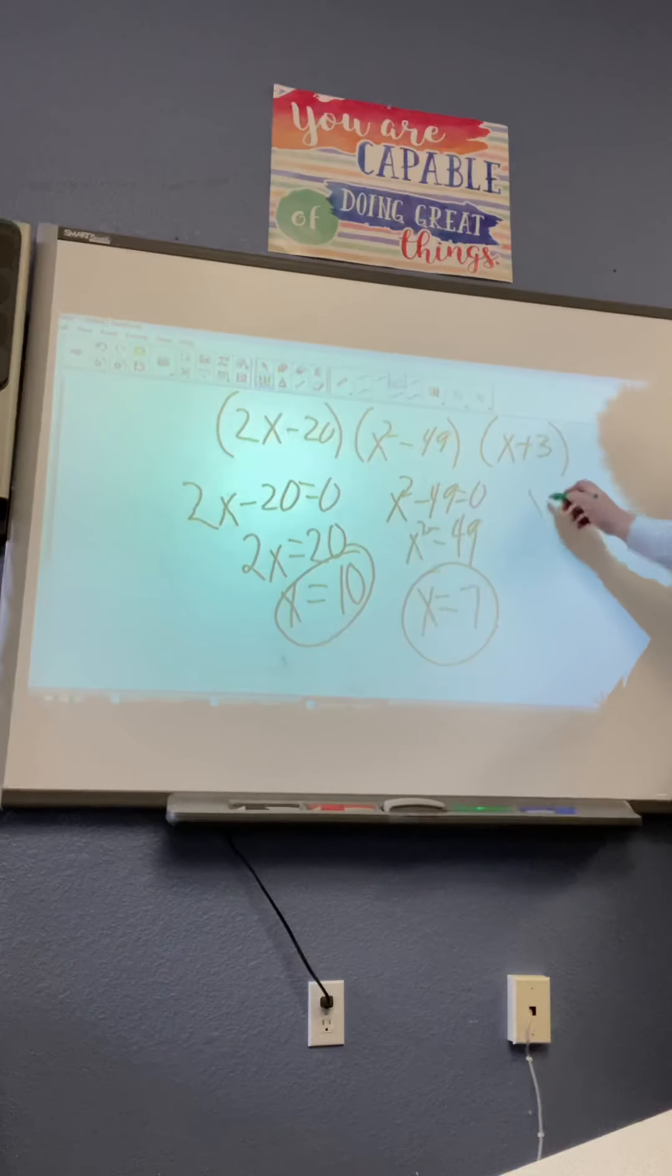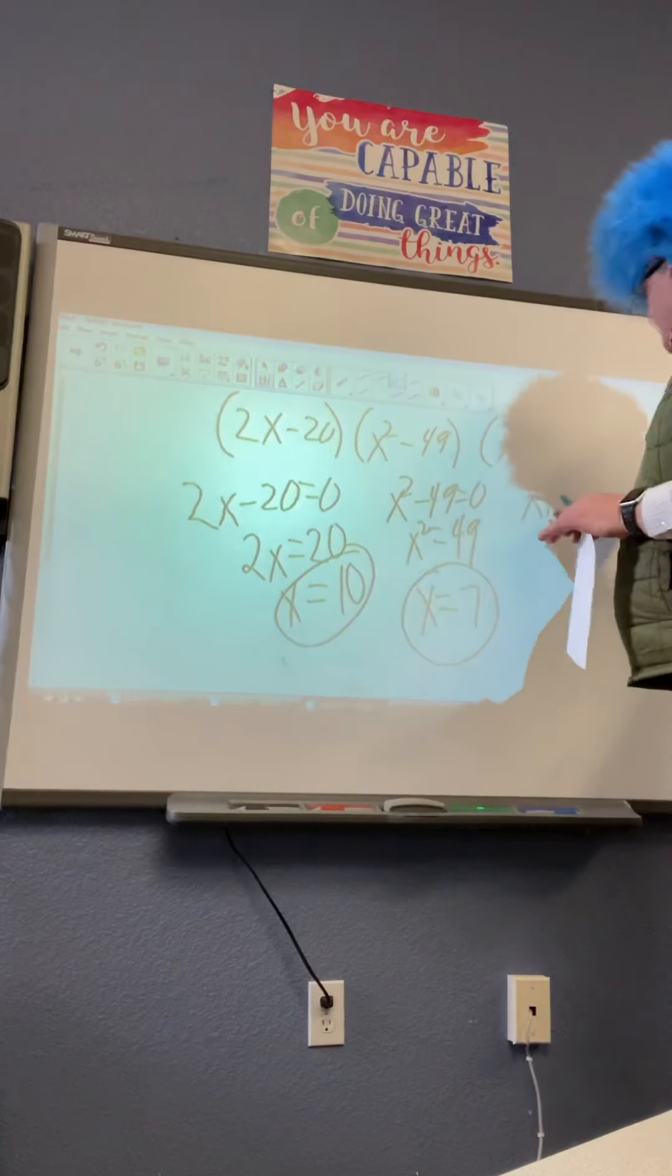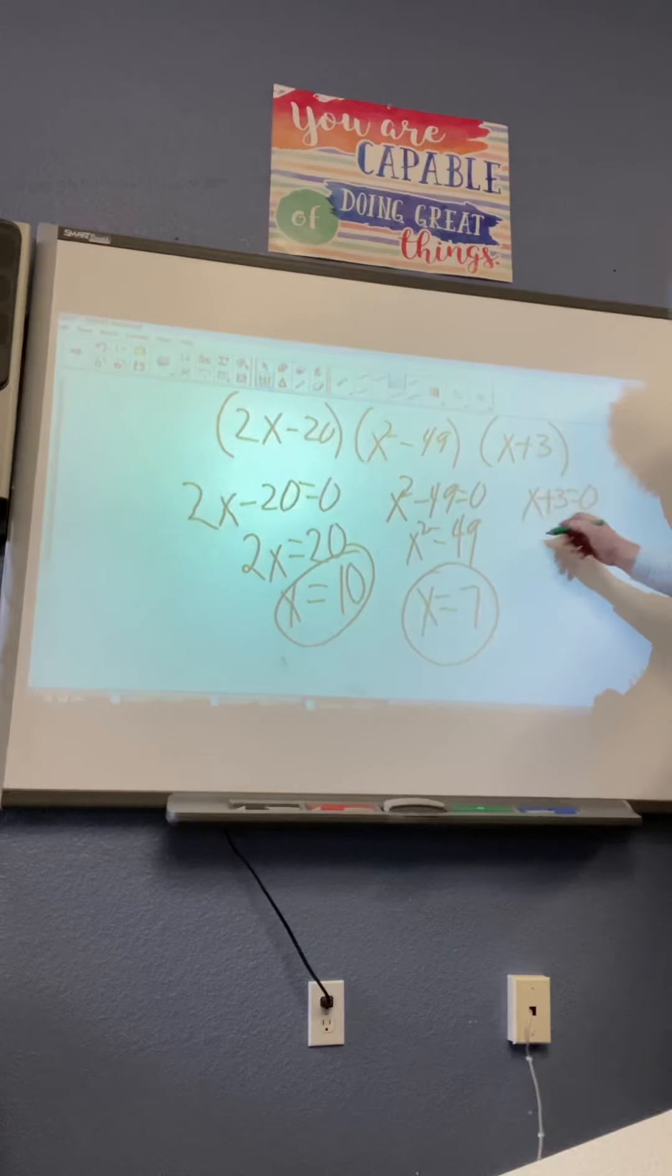All right, last one. To get rid of the positive 3, we have to subtract 3 from both sides. All right, so our 3 answers are 10, 7, and negative 3.